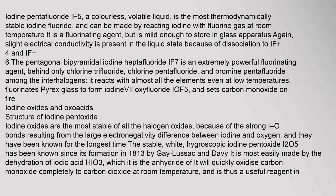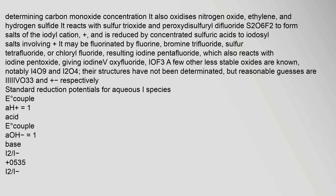Iodine Oxides and Oxoacids: Iodine oxides are the most stable of all the halogen oxides, due to the strong I–O bonds resulting from the large electronegativity difference between iodine and oxygen, and they have been known for the longest time. The stable white hygroscopic iodine pentoxide (I₂O₅) has been known since its formation in 1813 by Gay-Lussac and Davy. It is most easily made by the dehydration of iodic acid (HIO₃), and will quickly oxidize carbon monoxide completely to carbon dioxide at room temperature, making it a useful reagent for determining carbon monoxide concentration.